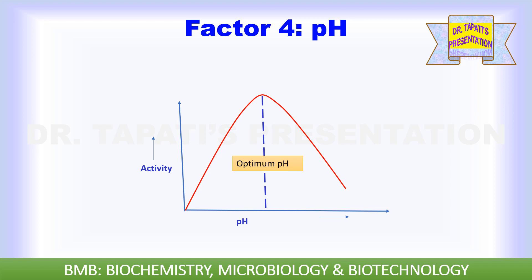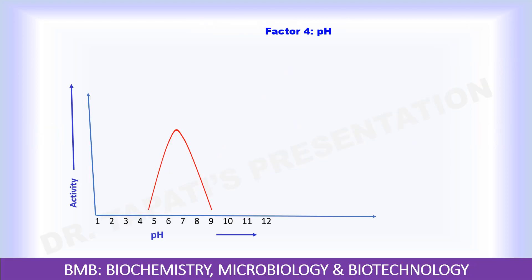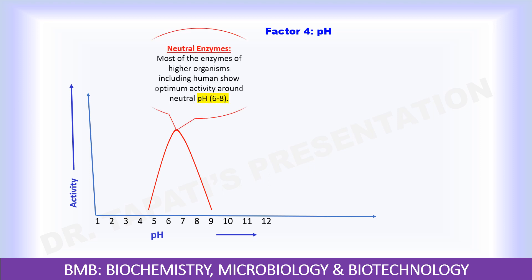Increase in hydrogen ion concentration considerably influences enzyme activity, and a bell-shaped curve is normally obtained. Each enzyme has an optimum pH at which velocity is maximum; below and above this pH, enzyme activity is much lower, and at extreme pH the enzyme becomes totally inactive. Hydrogen ions influence enzyme activity by altering the ionic charges on the amino acids, particularly amino acids present at the active site, substrates, enzyme-substrate complex, etc. Most enzymes of higher organisms show optimum activity around neutral pH, between pH 6 and 8.